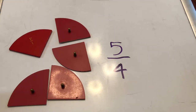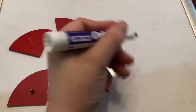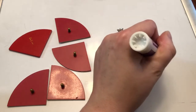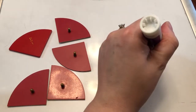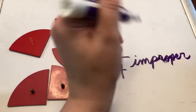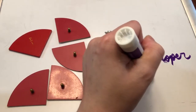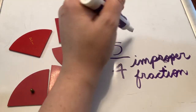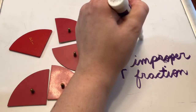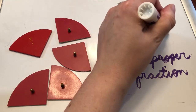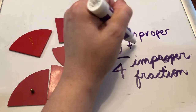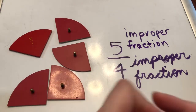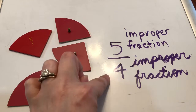This is called an improper fraction. It's called an improper fraction because the number on top — the numerator — is bigger than the denominator.